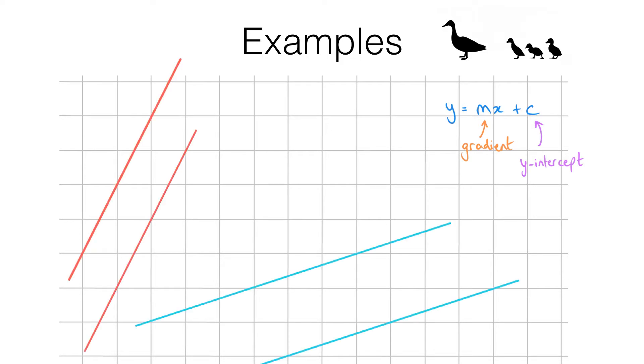Let's have a quick look at a couple of examples. This line segment here has a gradient of 2. We can tell because for every one step we go across we need to go two steps up to get back onto the line. So our change in y divided by our change in x is simply 2 divided by 1 which is just 2.